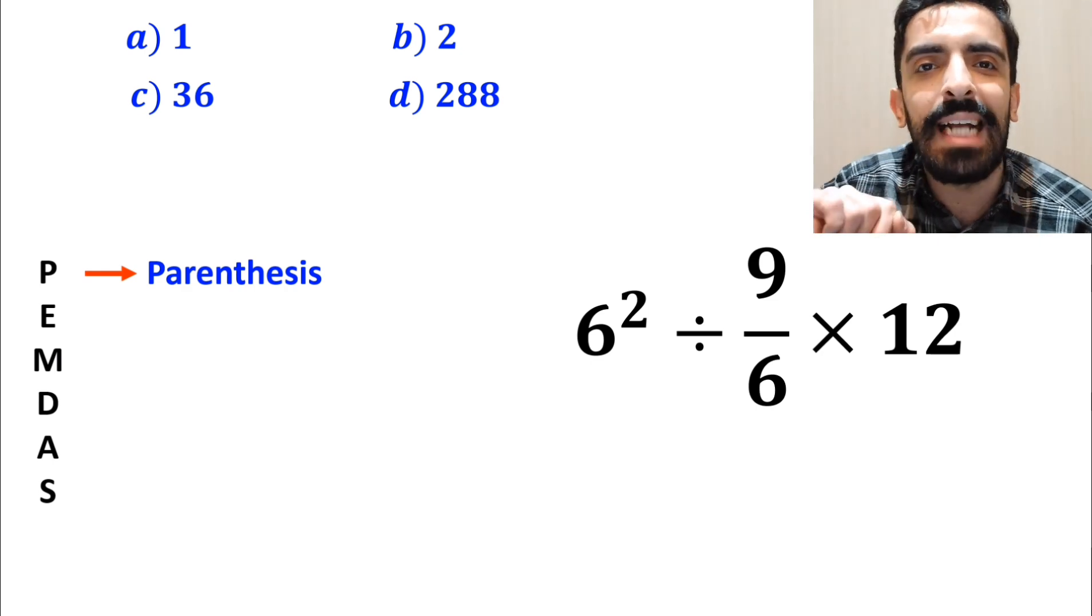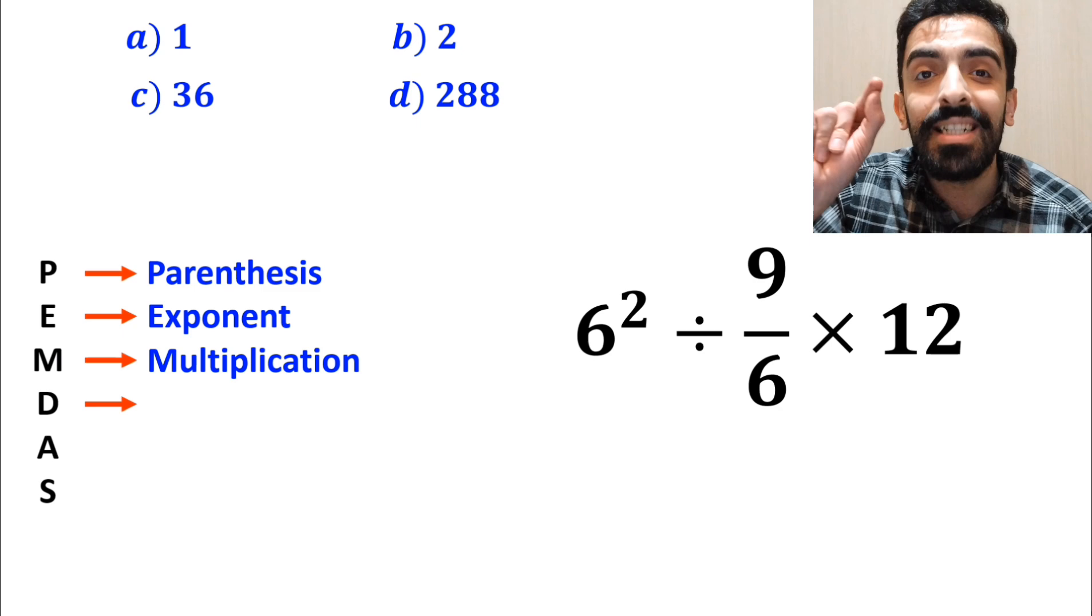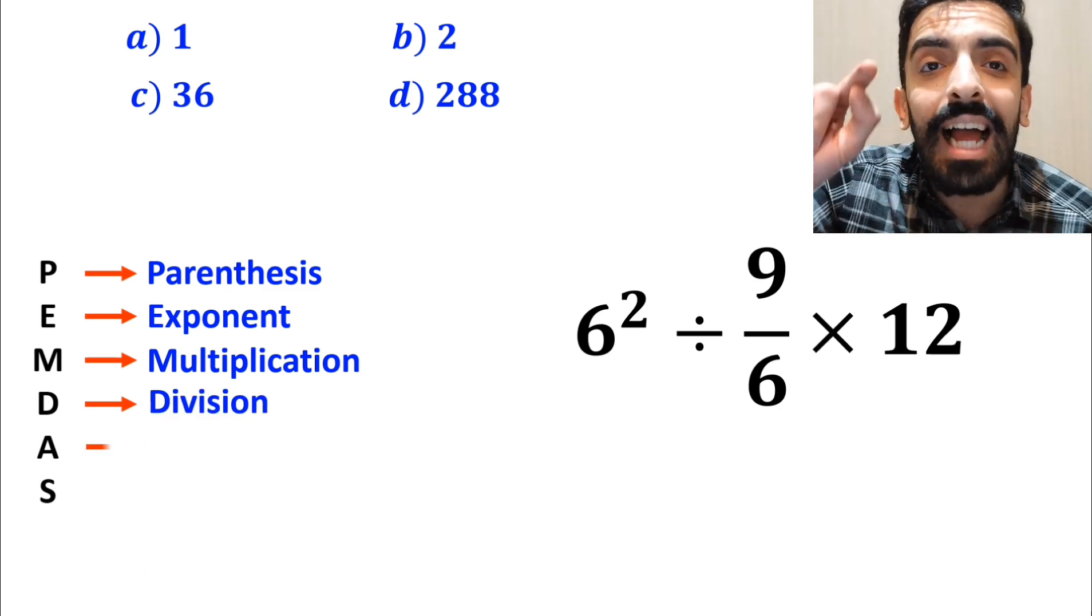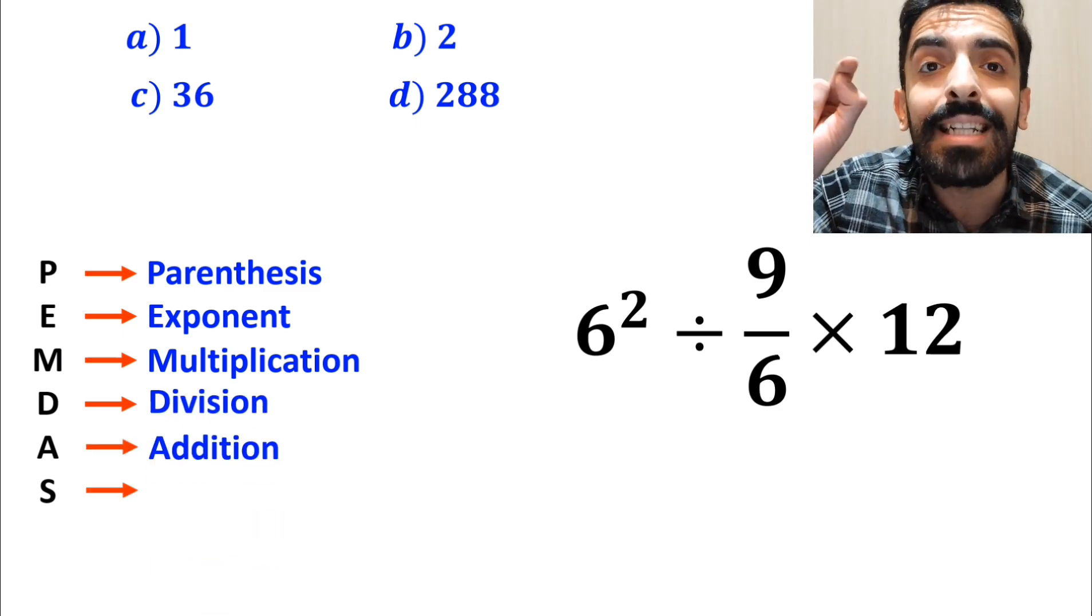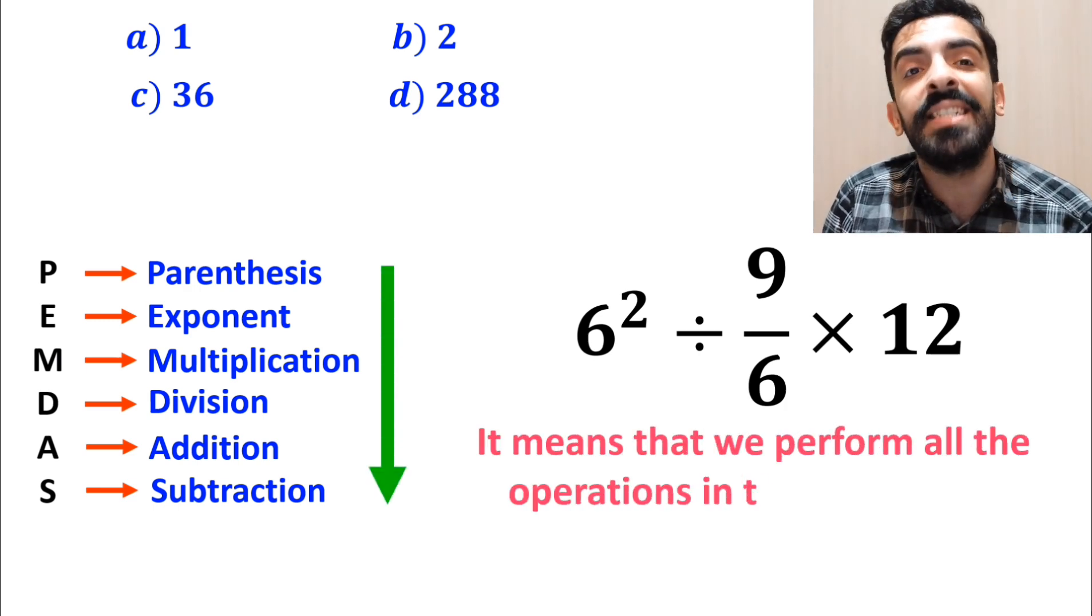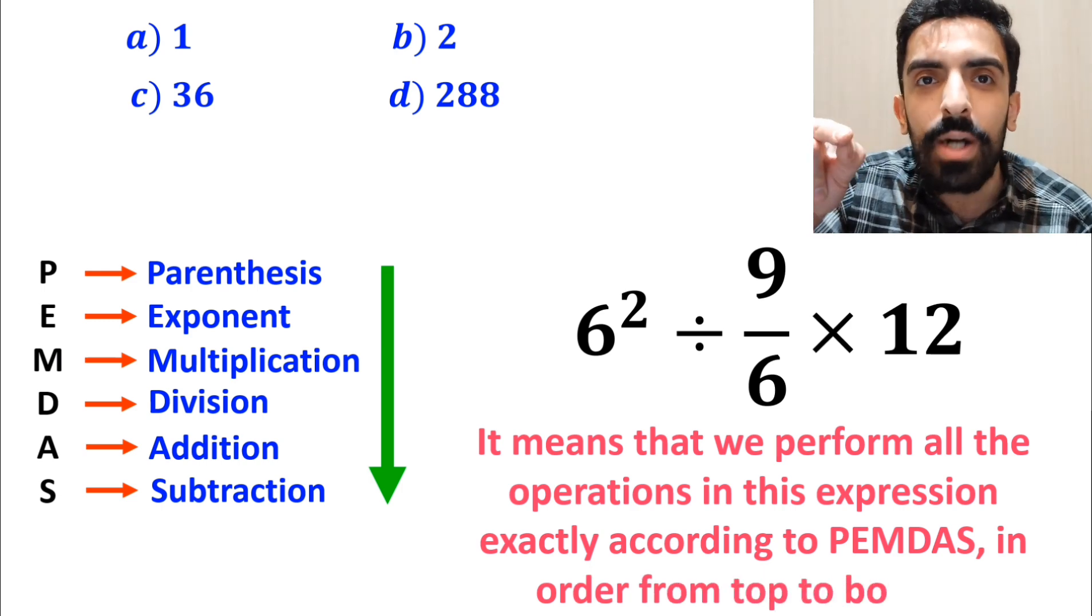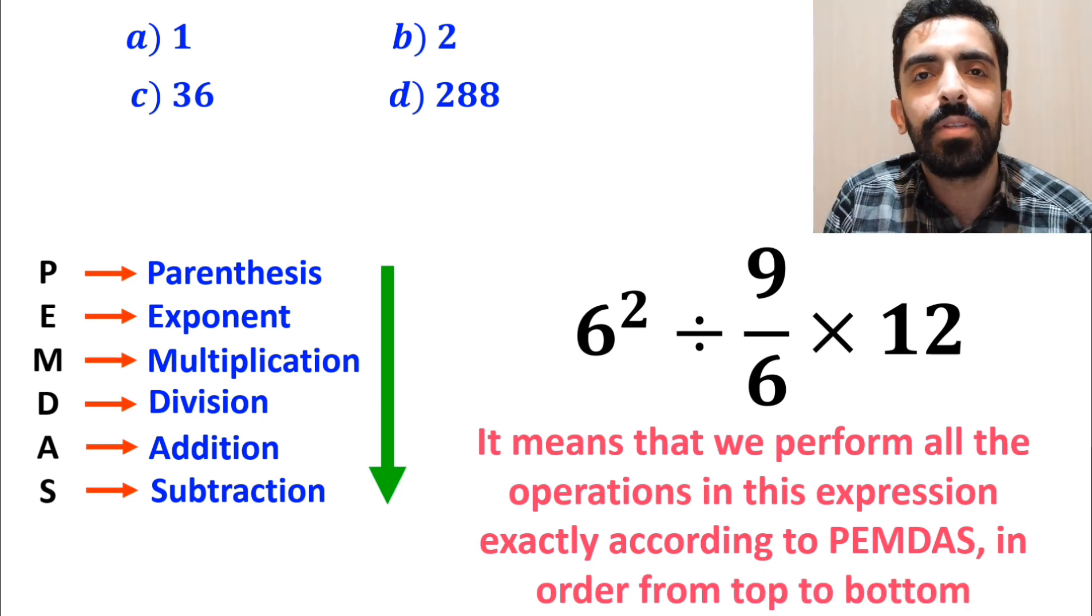And this rule, P stands for parenthesis, E stands for exponent, M stands for multiplication, D stands for division, A stands for addition, and S stands for subtraction. It means that we have to perform all the operations in this expression exactly according to the PEMDAS rule, in order from top to bottom.